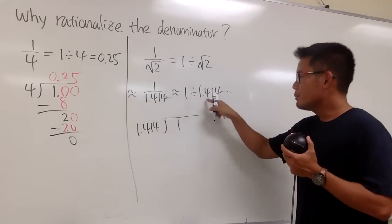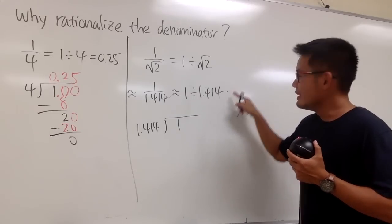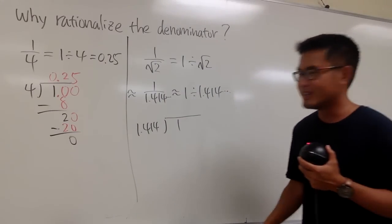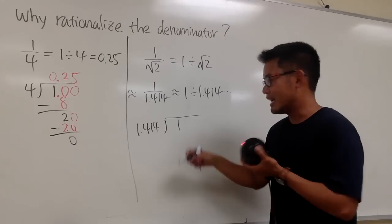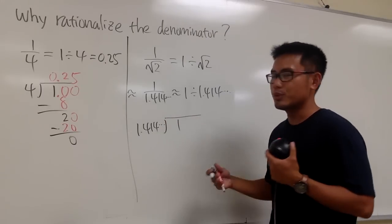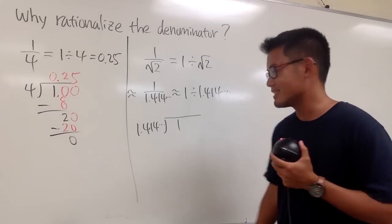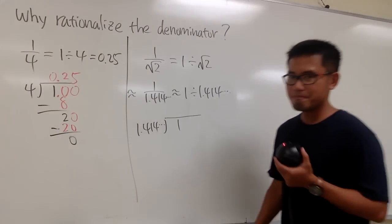Square root of 2, 1.414. In fact, there's no pattern because square root of 2 is irrational. I don't know what the next number is unless I have them memorized or use the calculator. But the key is, once again, we do not use the calculator in this case. Now, how can we divide?